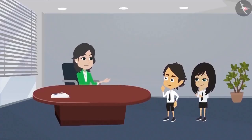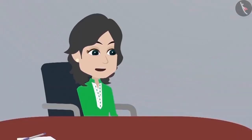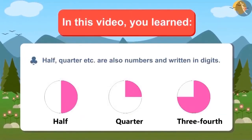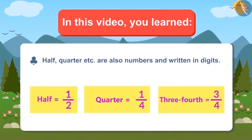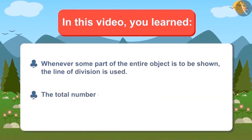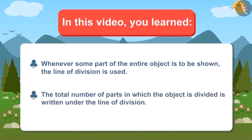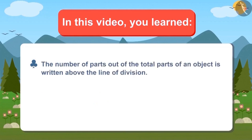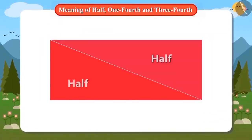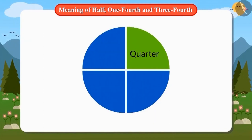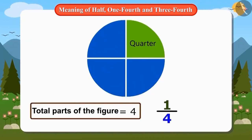I ate one-fourth of the paratha and Neha ate three-fourth of the paratha. Now you have understood — practice it and if you face any problem, come to me. In this video, we have learned that half, quarter, etc. are also numbers and they can be written in digits. Whenever some part of the entire object is to be shown, the line of division is used. The total number of parts is written under the line, and the number of parts out of the total is written above the line. To show half, one by two is written — one part out of two. And one by four is written for one-fourth — one part out of four.